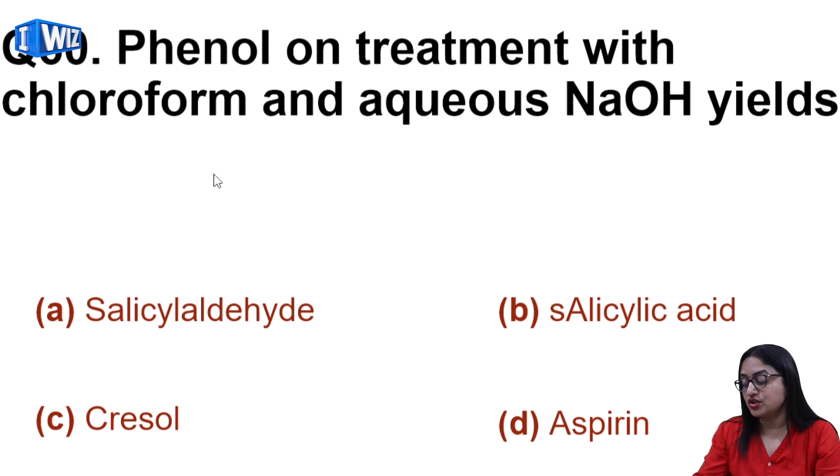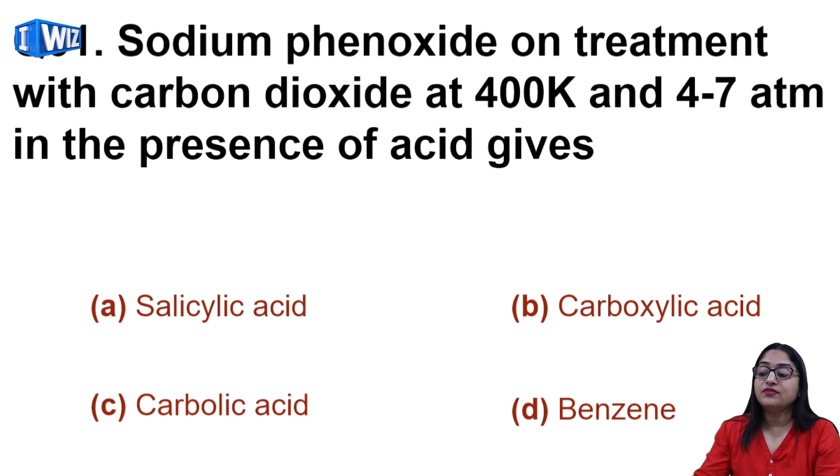Then phenol on treatment with chloroform and aqueous NaOH yields salicylaldehyde, which has OH and CHO group. Sodium phenoxide on treatment with carbon dioxide at 400 Kelvin and 4 to 7 atmosphere in the presence of acid gives salicylic acid, which has one OH group and one COOH group.